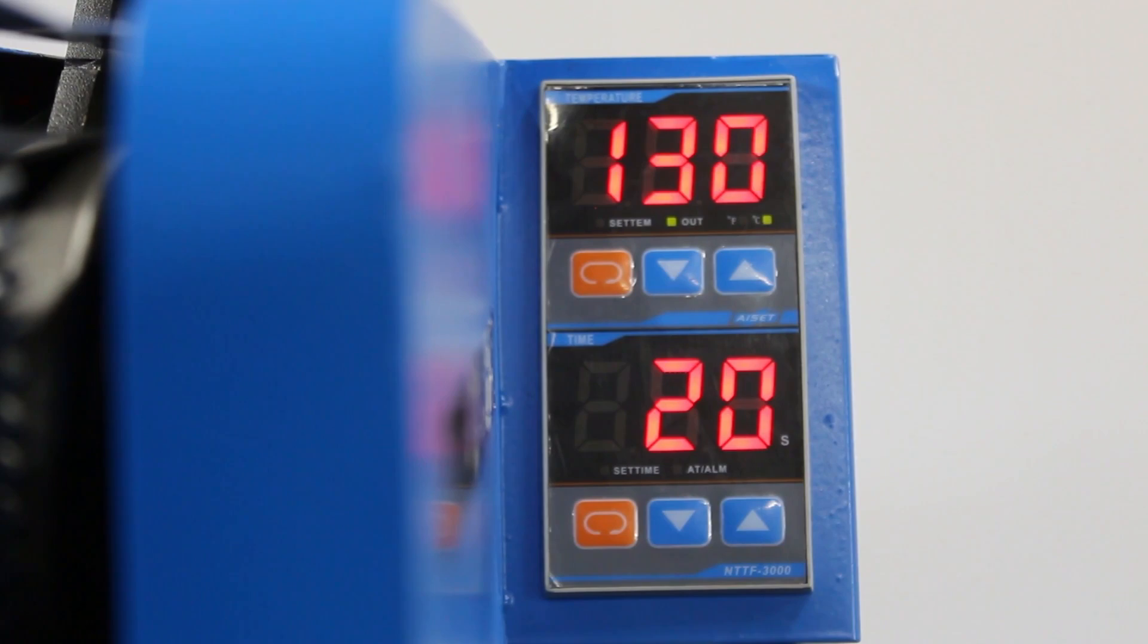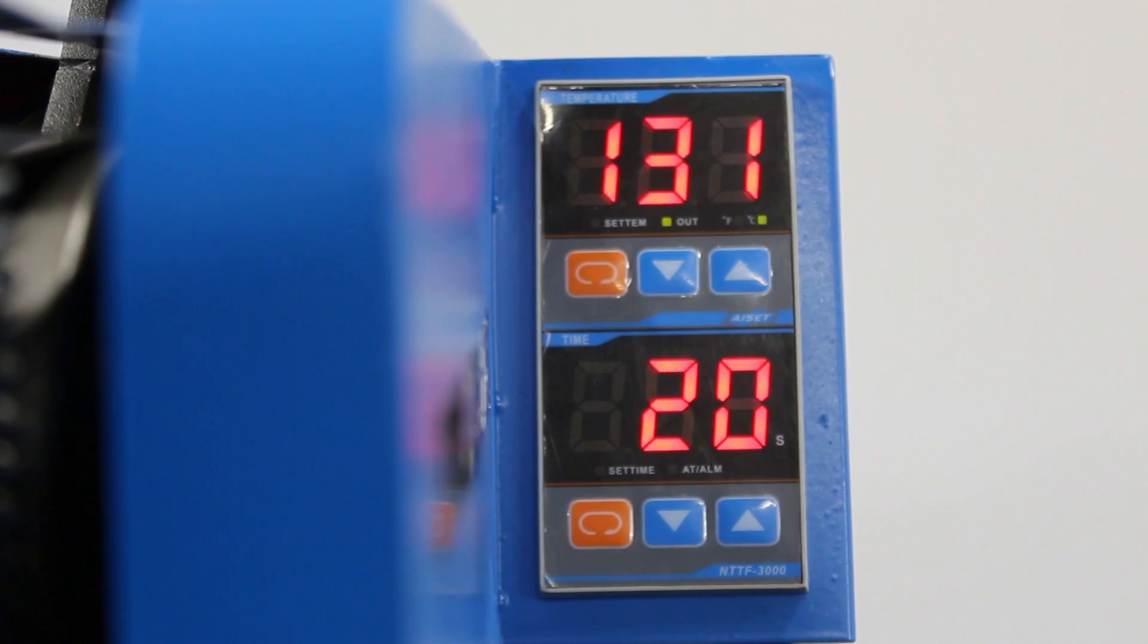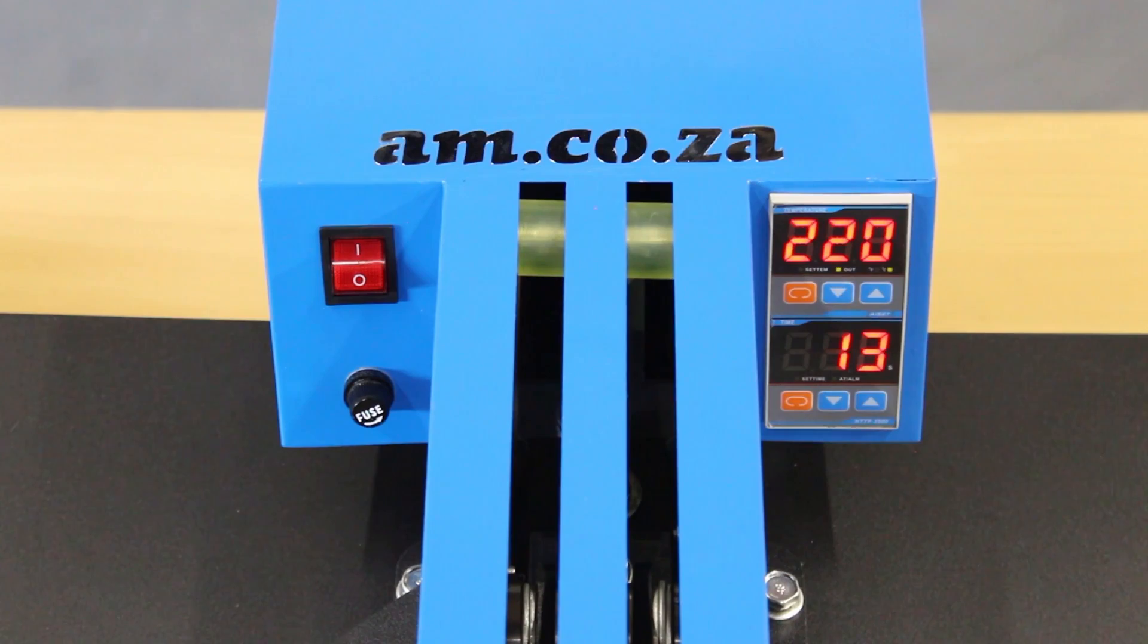With the 1800 Watt heating element, the heat rises up fast. Below the temperature setting is the timer and you can set it up from 1 to 999 seconds for the press. And it will start to count automatically once you press the handle down and will beep when the timer reaches zero.